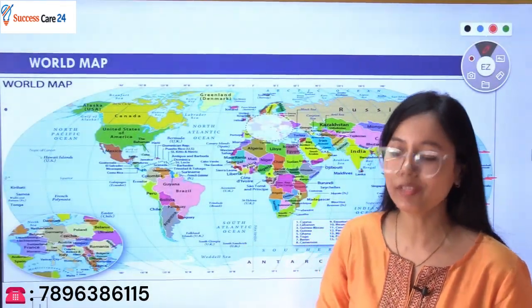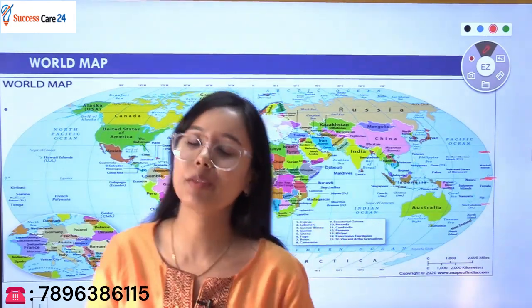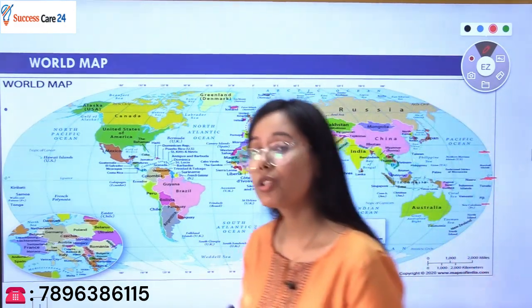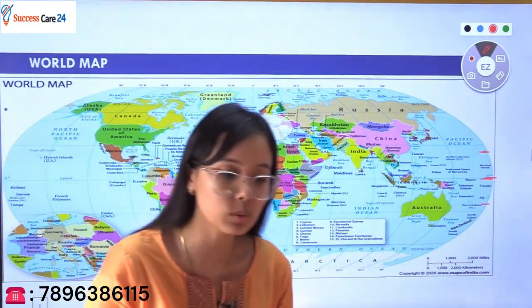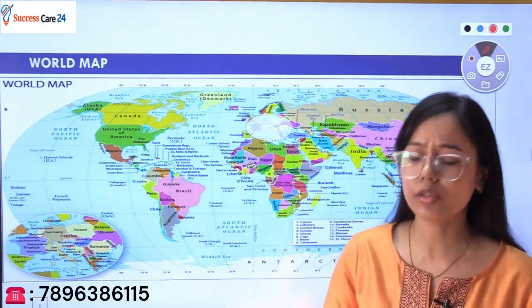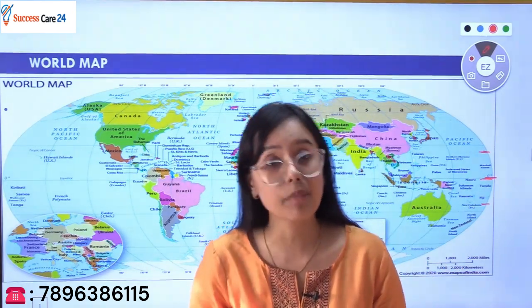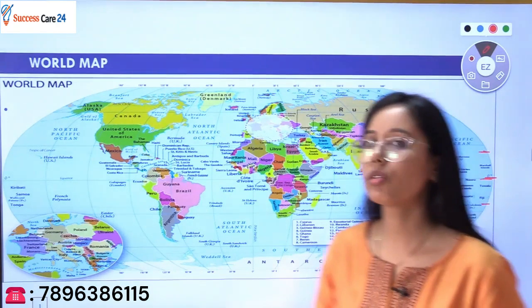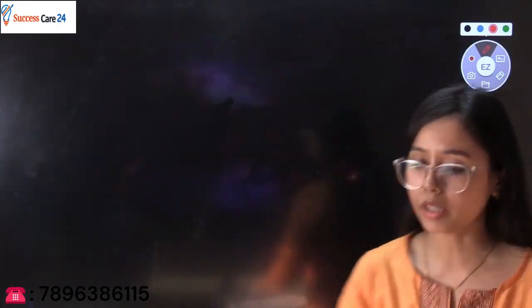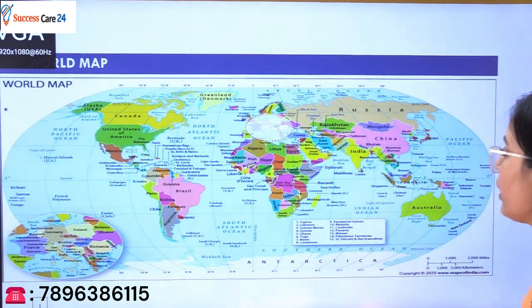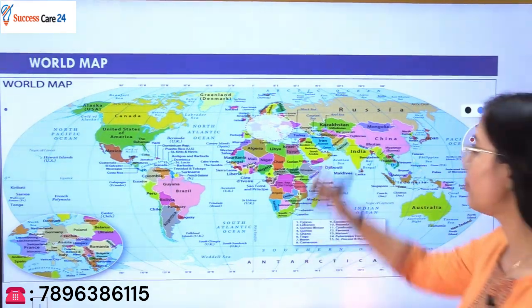Hey friends, welcome to Success Care 24. We are doing a geographic map series of important locations. Today I am going to take a very important topic for you: world maps showing which countries the Tropic of Cancer, Tropic of Capricorn, and Equator pass through. This is a very common topic but students ignore it and questions do come from it. We all know that on the globe there are three imaginary lines which are very important.